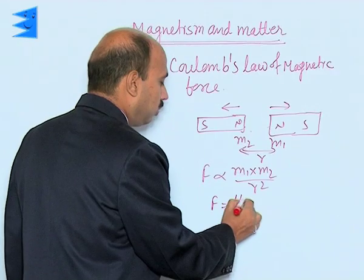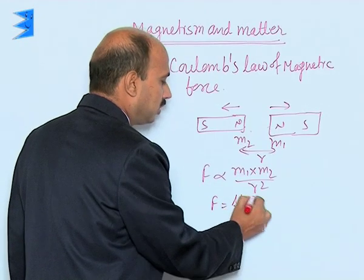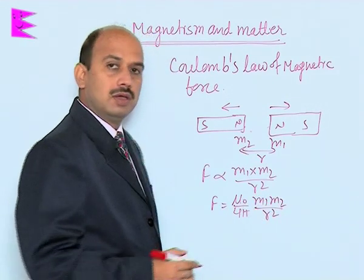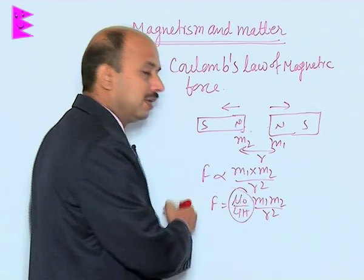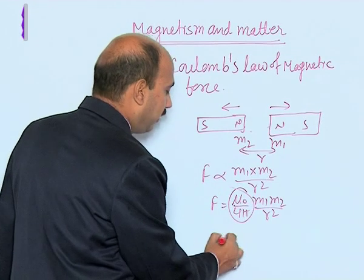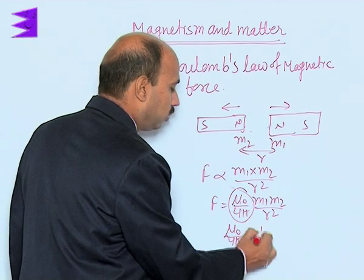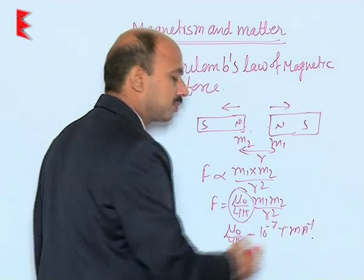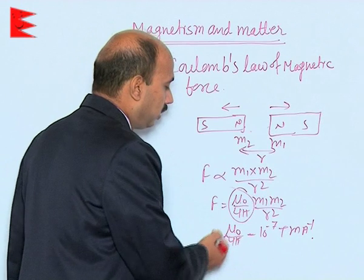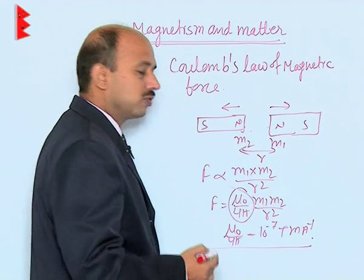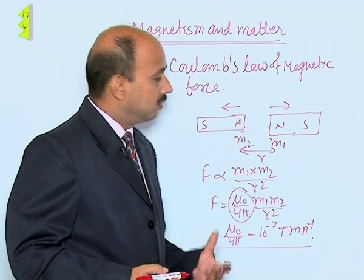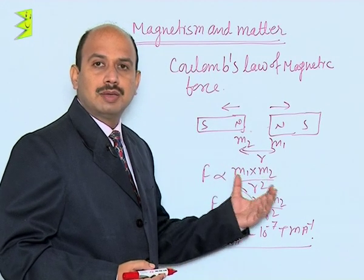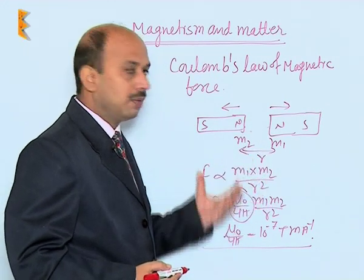We can write F = (μ₀/4π) × (m₁ × m₂) / R², where μ₀/4π is a constant with value 10⁻⁷ tesla·meter per ampere. This is Coulomb's law for magnetic force. In the electrostatic force we used charges q₁ and q₂; here we use the magnetic pole strengths m₁ and m₂.